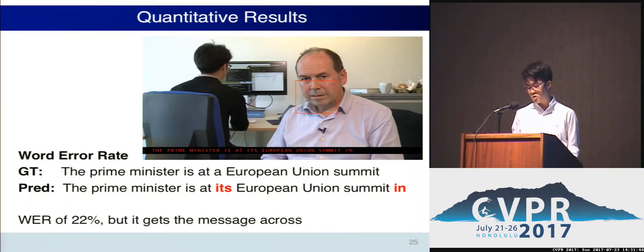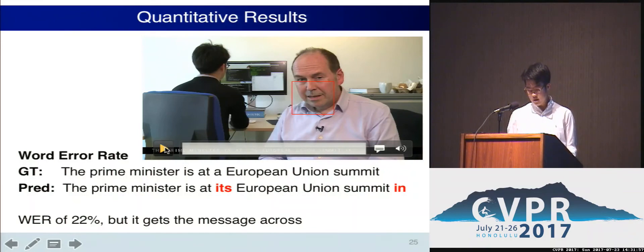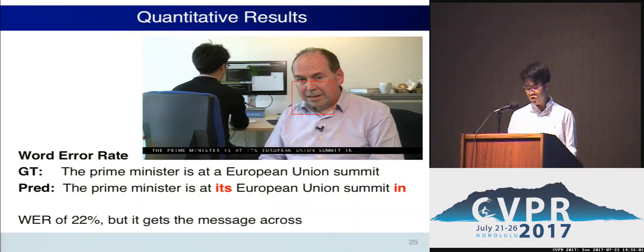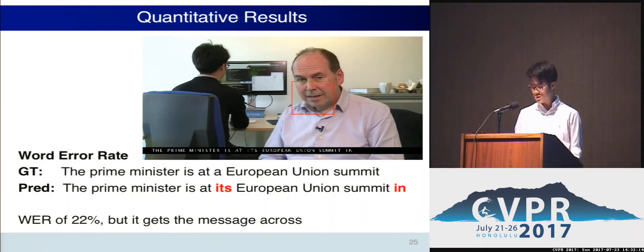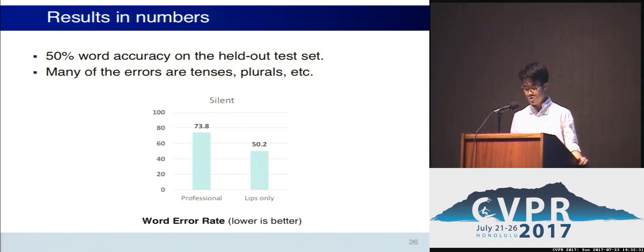We use a metric called word error rate to measure performance. For example, for the sentence 'The Prime Minister is at a European Union summit,' the system gets two out of nine words wrong, which equates to a 22% word error rate, despite getting the message across. On the test set, the average word error rate is 50%, which is a lot better than human professionals who get over 70% wrong. 50% might sound high, but word error rate is a harsh measure — a missing 'S' or wrong tense gives a high error rate, but the output is still often comprehensible.